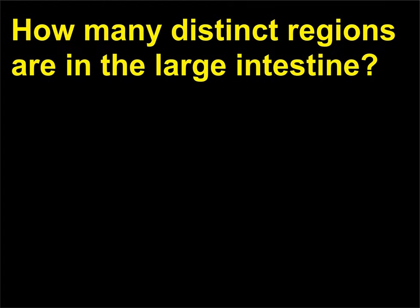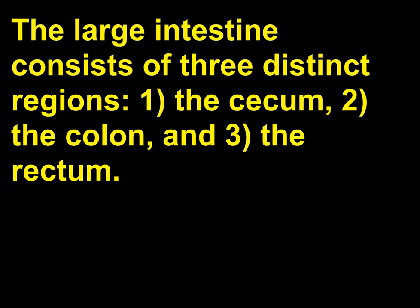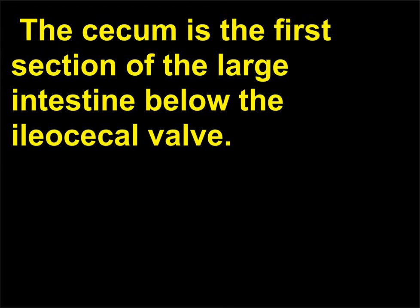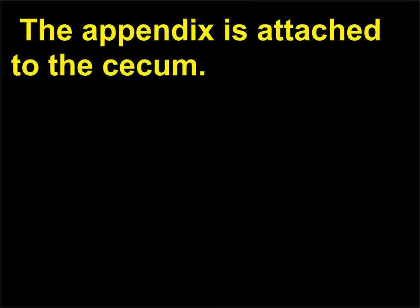How many distinct regions are in the large intestine? The large intestine consists of three distinct regions: 1) the cecum, 2) the colon, and 3) the rectum. The cecum is the first section of the large intestine below the ileocecal valve. The appendix is attached to the cecum.